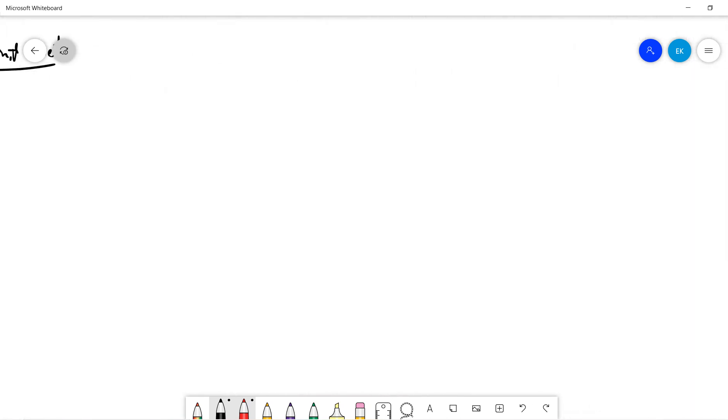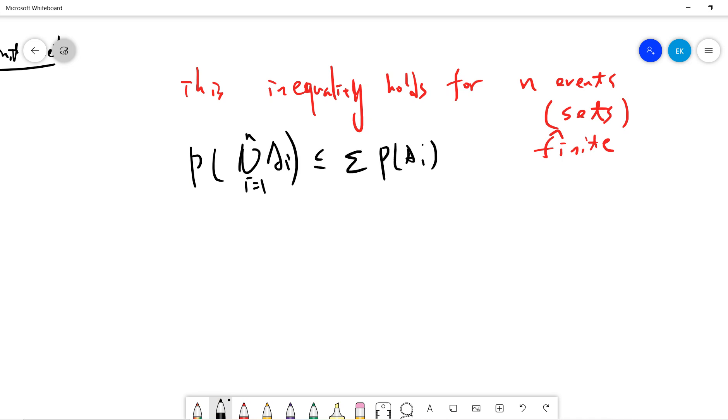So you know n equals one and n equals two. Now we hope to prove by induction. Let's say this inequality holds for n events, or n finite sets. That means if you take any n events and union them, the probability will be less than the sum of all. So P(union Ai) from i=1 to n is always less or equal to sum of P(Ai) from i=1 to n.